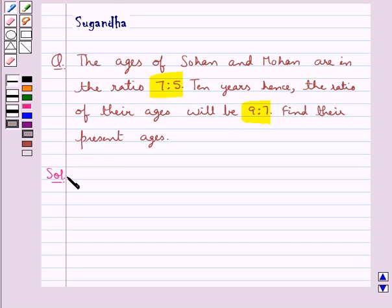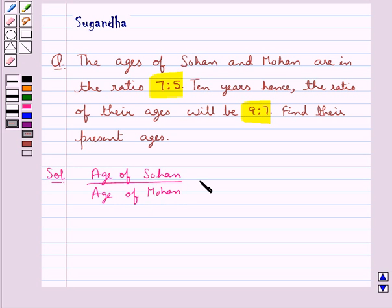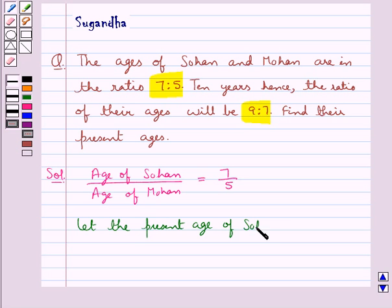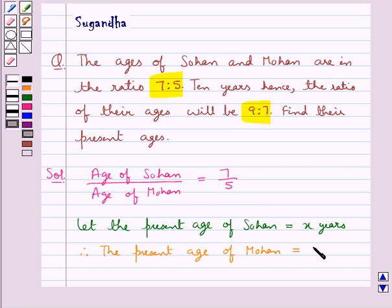Now we are given that the ratio of the ages of Sohan and Mohan is 7 is to 5. So we have age of Sohan upon age of Mohan equal to 7 upon 5. We let the present age of Sohan be equal to x years. So we get the present age of Mohan equal to 5x upon 7 years.